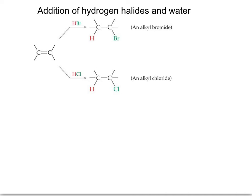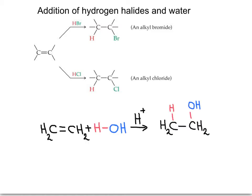Now we need to explore the addition of asymmetrical reagents to the family of alkenes. In this case we will study the addition of hydrogen bromide, hydrogen chloride, and water. The addition of a hydrogen halide to an alkene adds a hydrogen to one carbon of the double bond and the halogen to the other carbon. The addition of water to an alkene adds hydrogen to one carbon of the double bond and an OH to the other carbon.